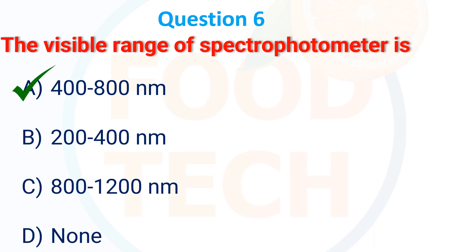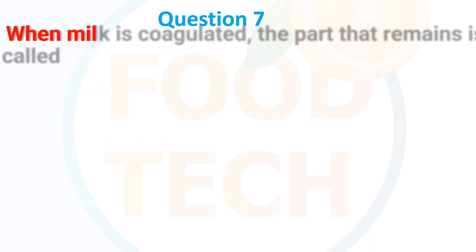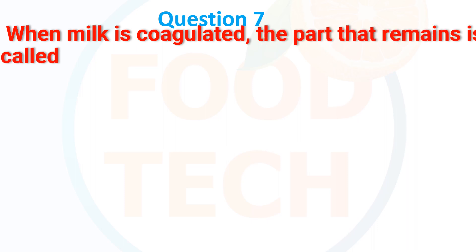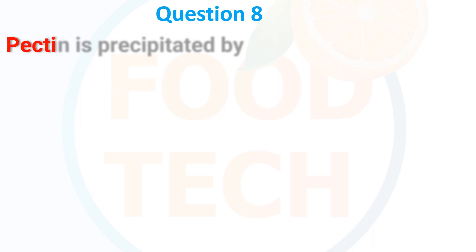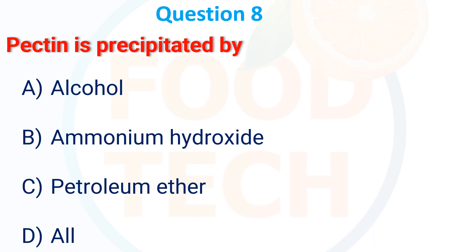When milk is curdled, the part that remains is called: A) casein, B) whey, C) both, D) none. The answer is B — whey. Pectin is precipitated by: A) alcohol, B) ammonium.